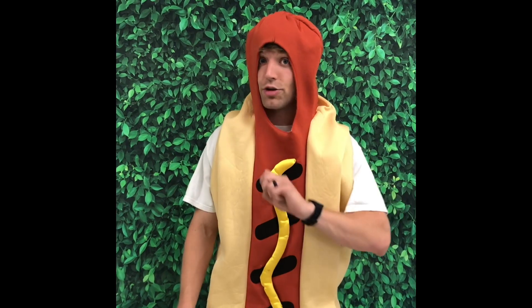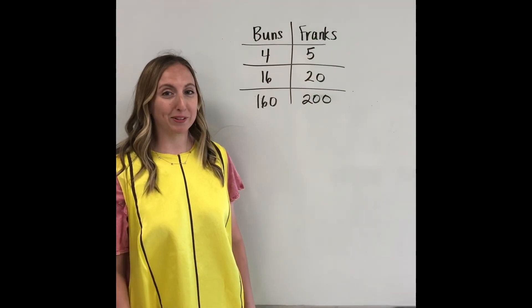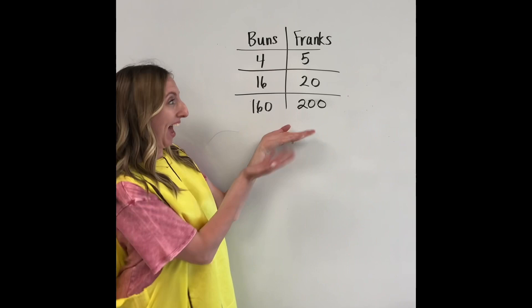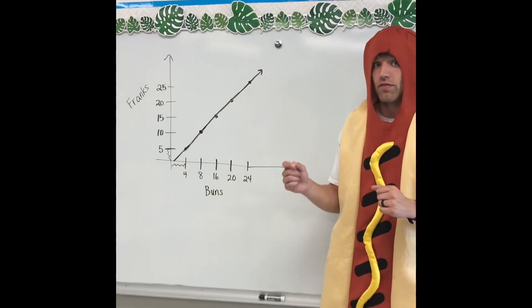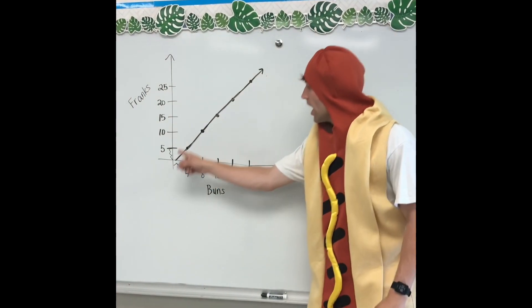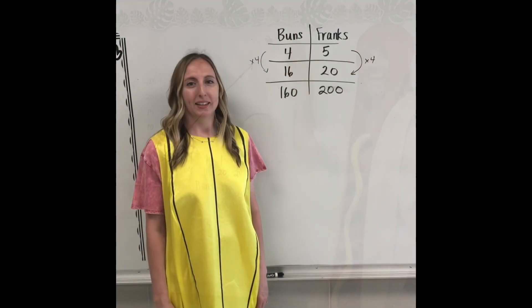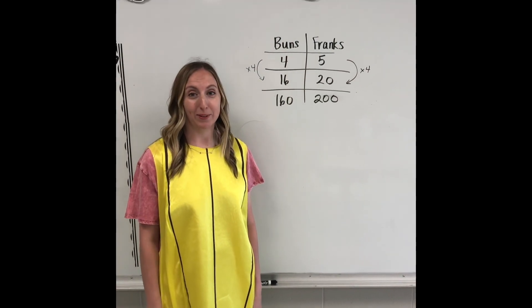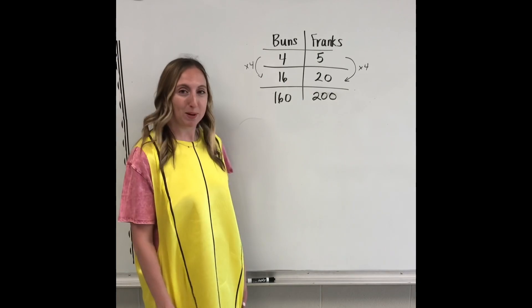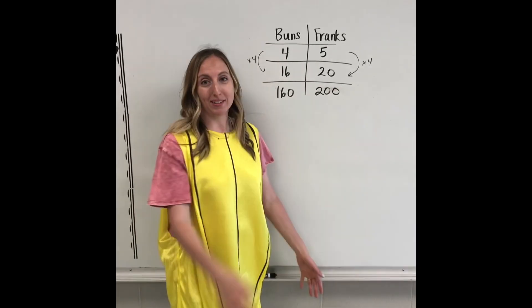Now the second standard you have to pass has two parts: making tables of equivalent ratios, and being able to plot those equivalent ratios on our coordinate plane. Equivalent ratios are just like equivalent fractions — they have the same multiplication or division pattern.